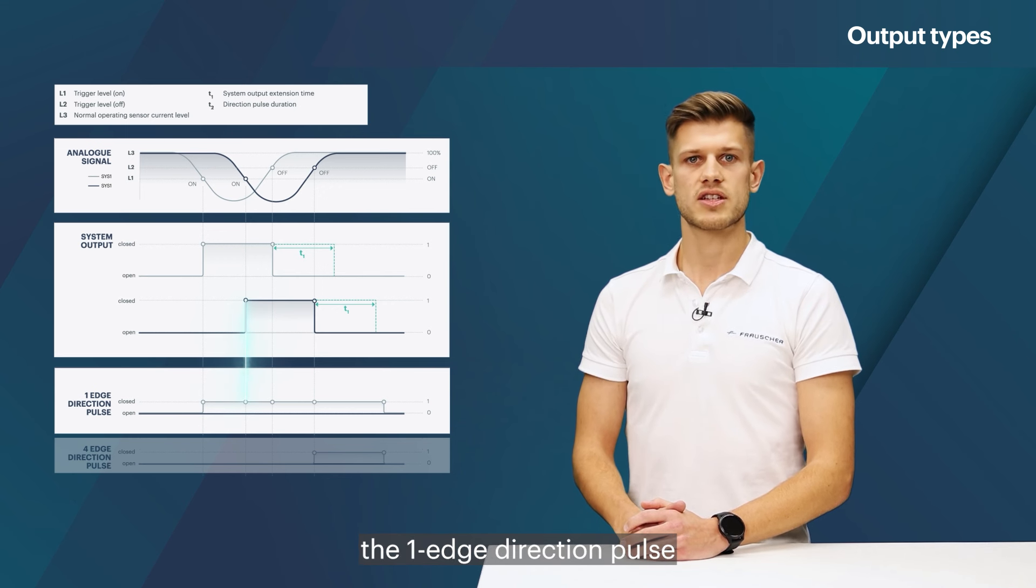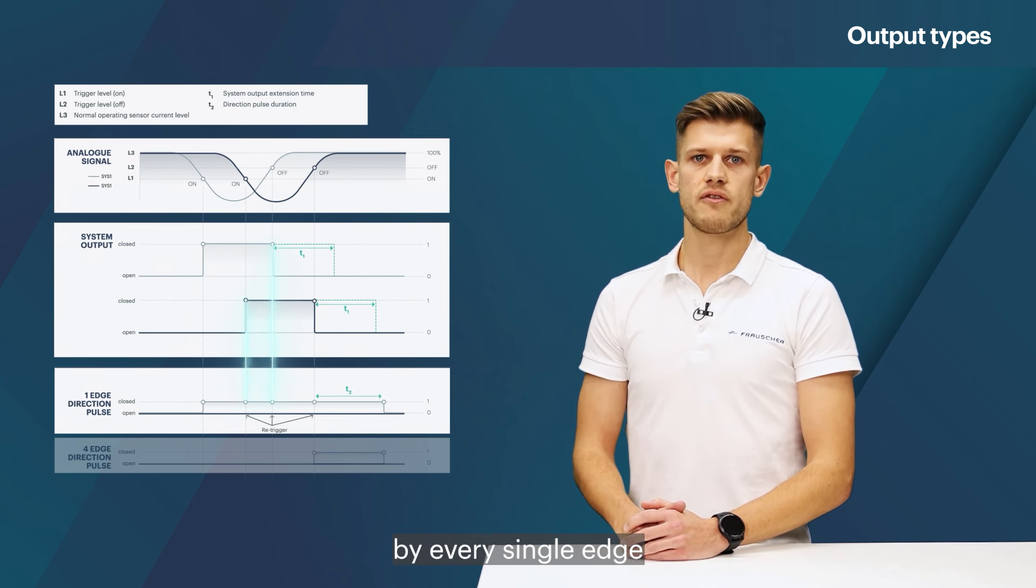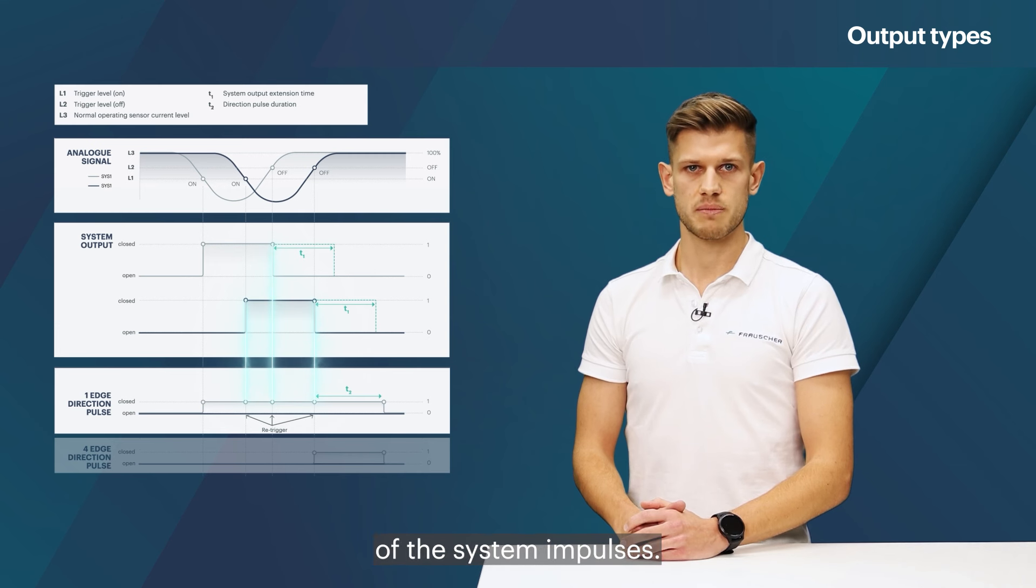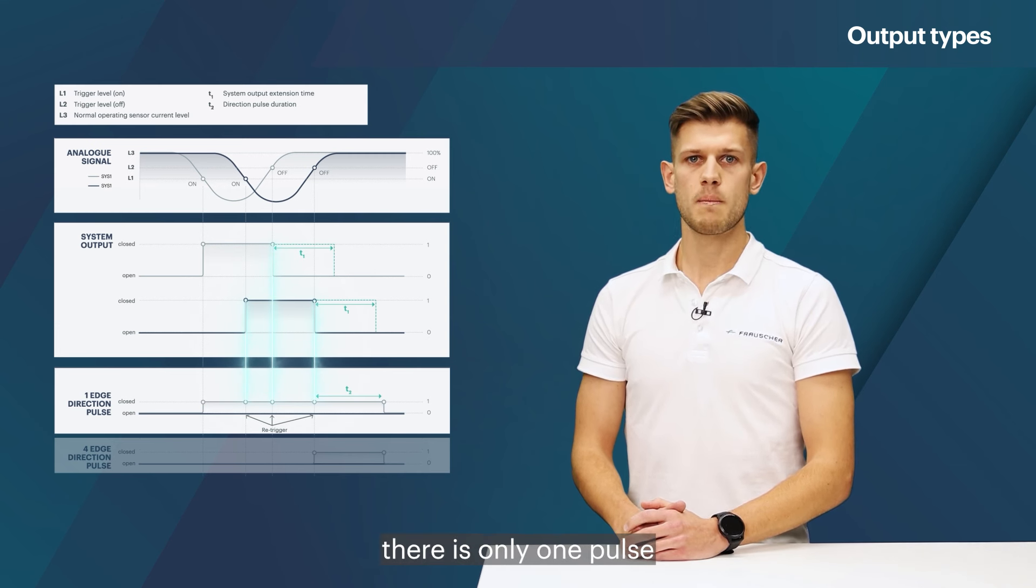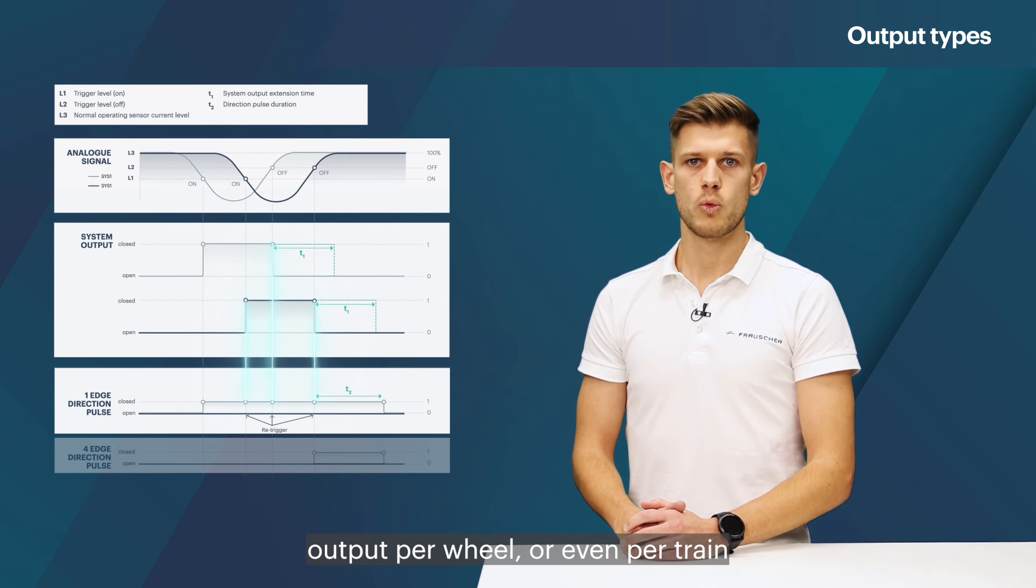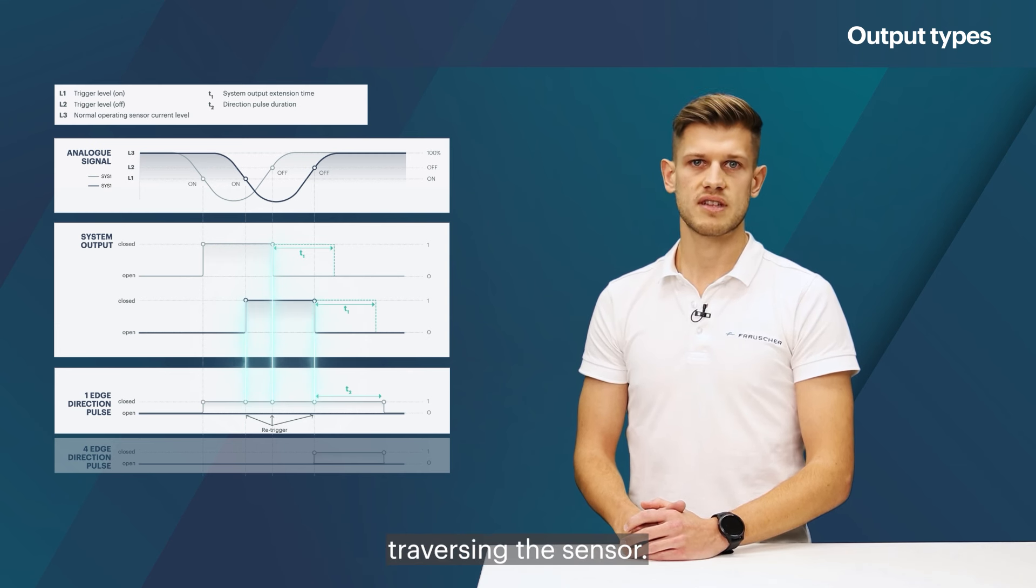the one edge direction pulse gets re-triggered by every single edge of the system impulses. In this way, there is only one pulse output per wheel or even per train traversing the sensor.